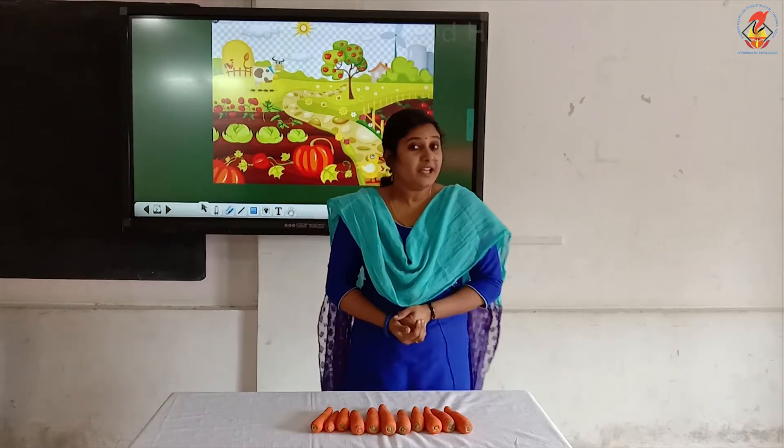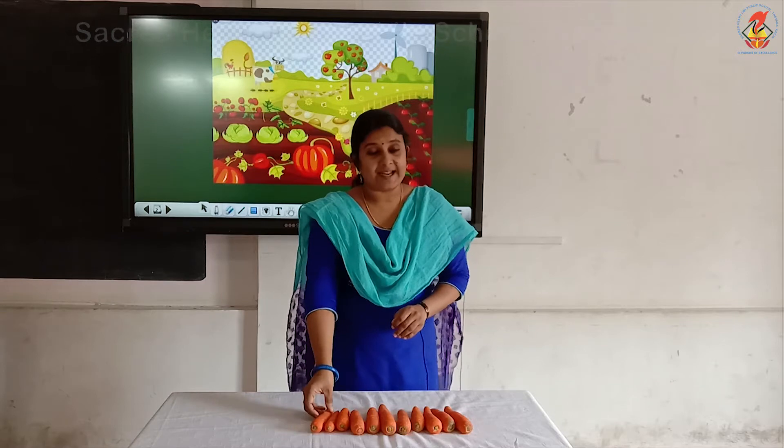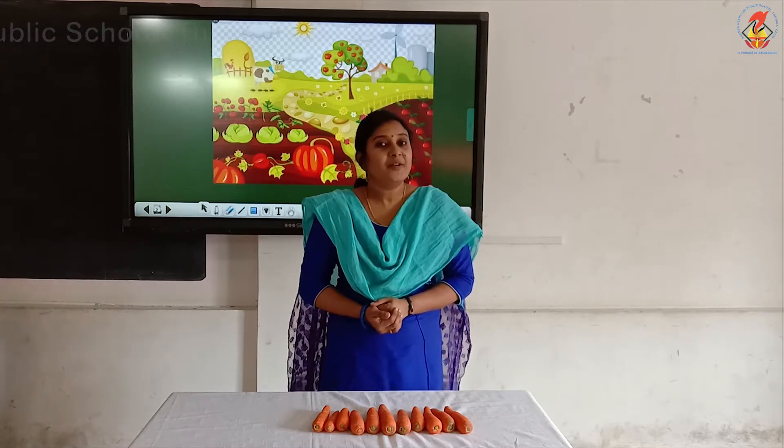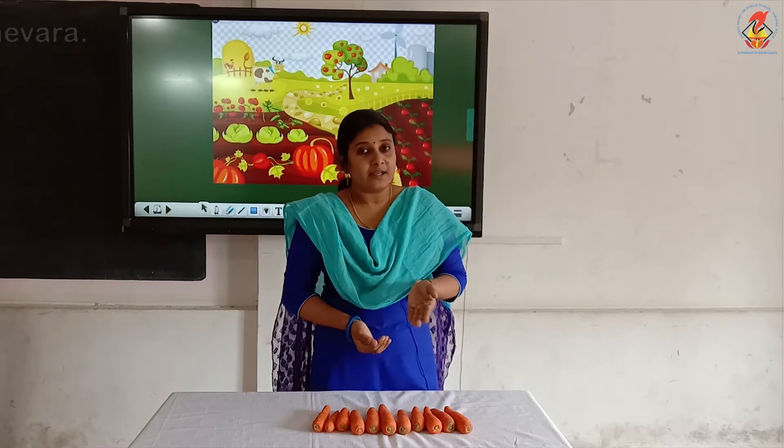Children, how many carrots do I have now? 11 carrots. When I add one more carrot to the existing carrots, we got 11 carrots. In our last class, we learned if we add one more number to the existing number, we will get the next number. Remember, here I had 10 carrots and I added one more carrot to that group and now we got 11 carrots. Understood?